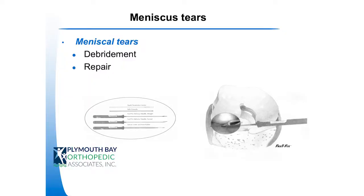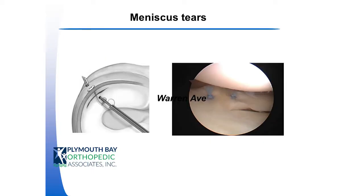Techniques for repair have improved. We now use these arthroscopic anchors — little devices that have a stitch attached to them that you can push through the poke hole of your arthroscopy portal and implant an anchor through the meniscal tissue, then implant a second stitch next to it and pull it tight in a sort of slipknot. What was historically a procedure that required a large incision and a big recovery can now be done much quicker with similar results and a lot less trauma.